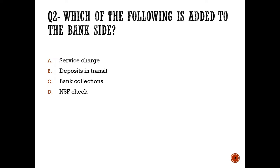Question number two: Which of the following is added to the bank side? A, service charge; B, deposit in transit; C, bank collections; or D, NSF. The answer is B — deposit in transit — because the deposit was already recorded by the company and sent to the bank, but not yet received by the bank, so it should be recorded on the bank side as an addition.